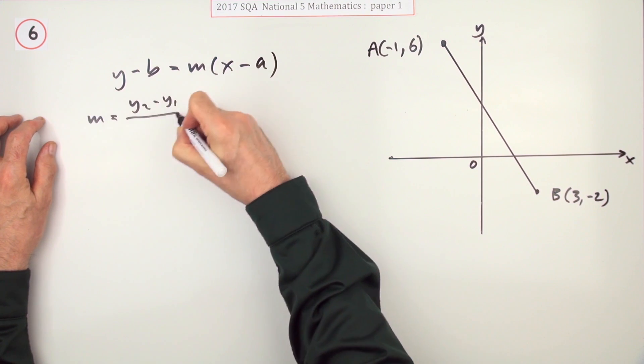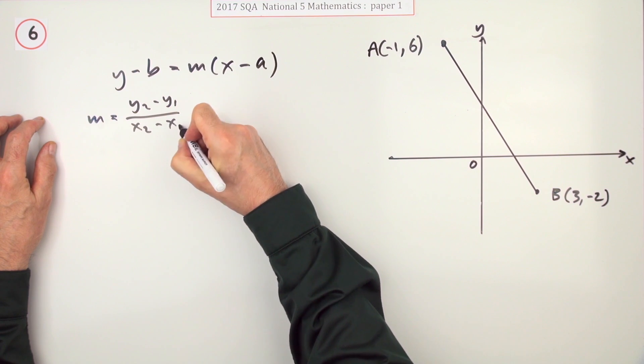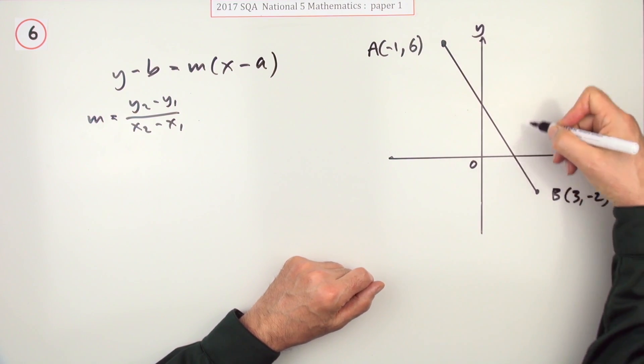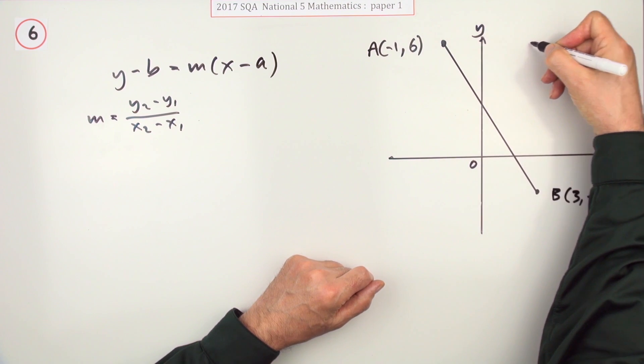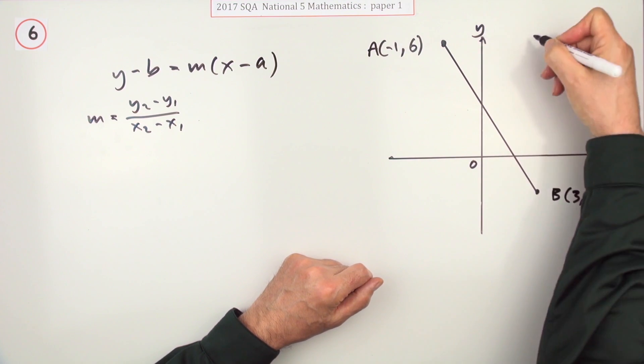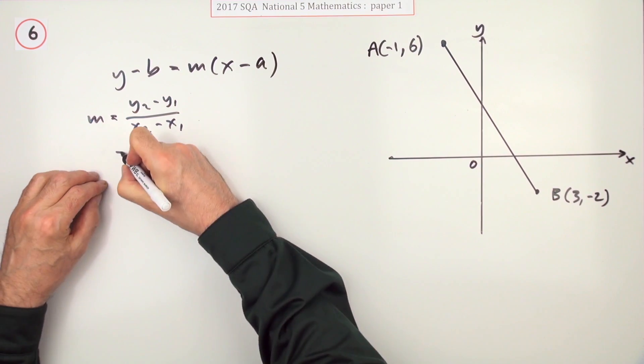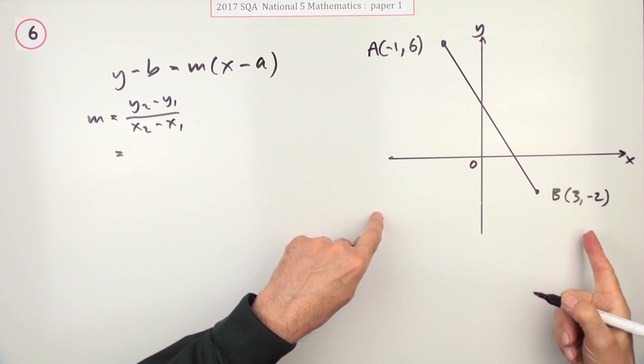y₂ minus y₁ over x₂ minus x₁, distance up over distance along. But notice in this case there should be a negative answer. The distance along but the distance up is actually a distance down. When you do y₂ take away y₁, you can expect that to be negative. I've got the points written here.